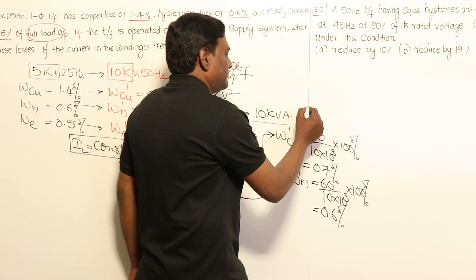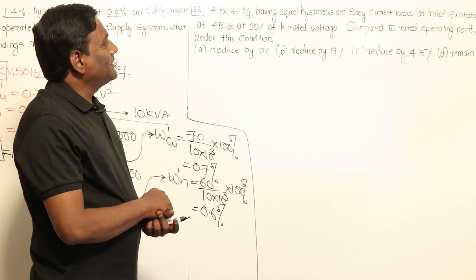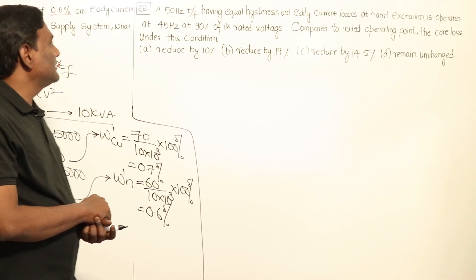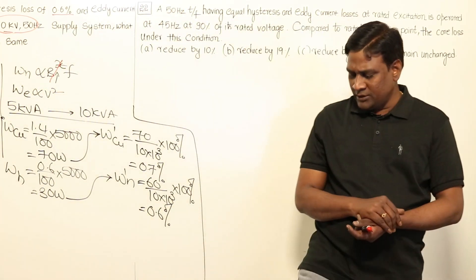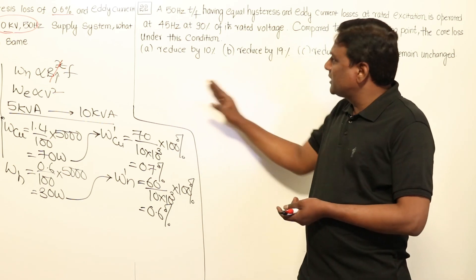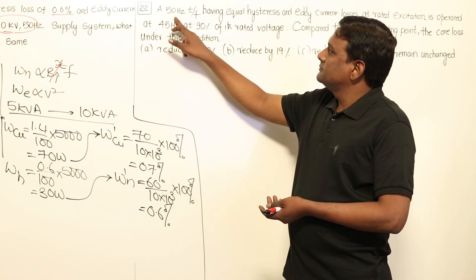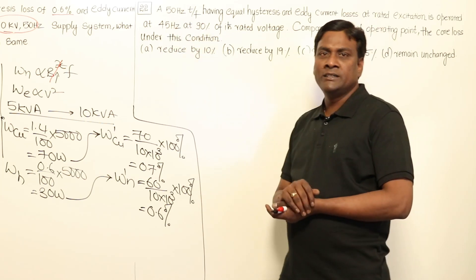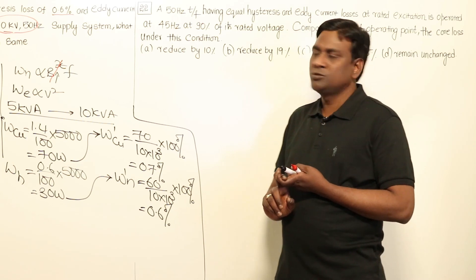Now coming to the next question — this is an old GATE question. A 50Hz transformer having equal hysteresis and eddy current loss at rated excitation is operated at 45Hz at 90% of rated voltage. Compared to the rated operating point, what is the core loss under this condition? Now, V/F ratio: voltage is reduced by 10% and frequency is also reduced by 10%, so V/F ratio is maintained constant.